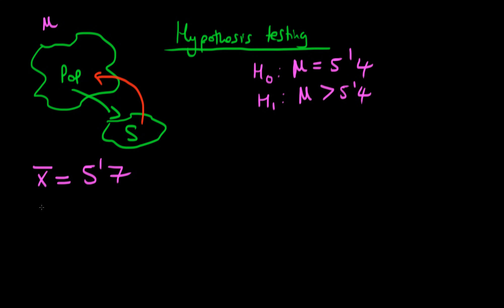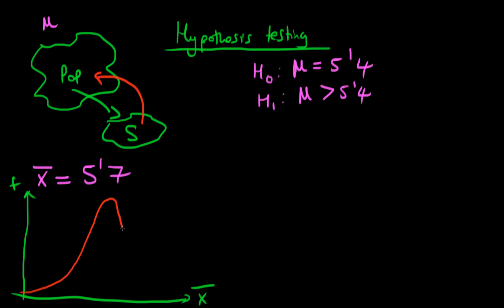The way we could go about this is if we took repeated samples from our population and for each sample calculated the sample mean. The central limit theorem tells us that if we take arbitrarily many samples — technically, if we let the number of samples go to infinity — then our finite sample distribution should be centred around the true population parameter mu. If the null hypothesis is true, then mu is actually equal to 5 foot 4.